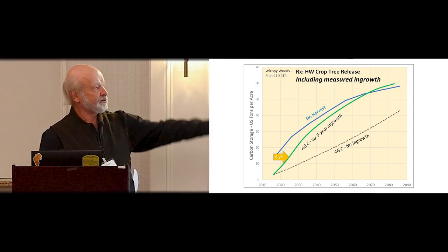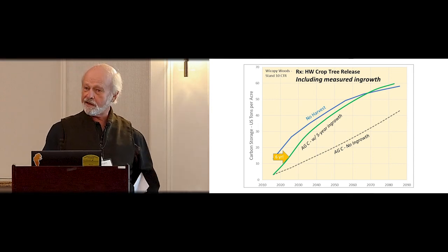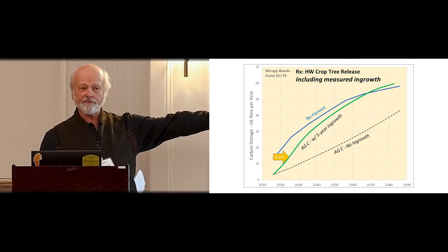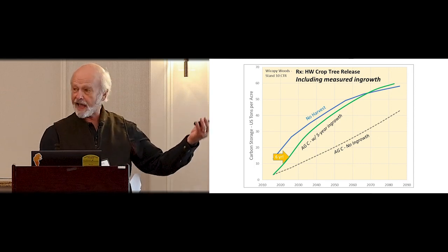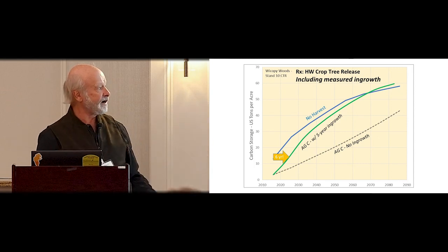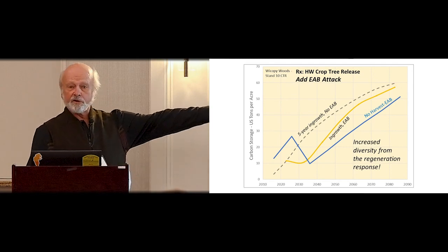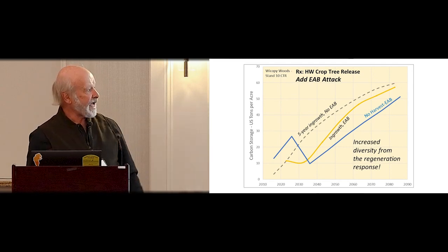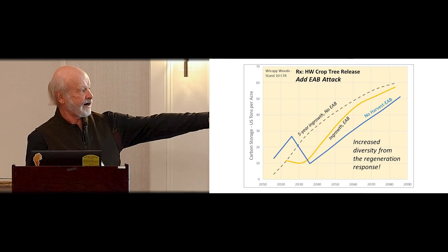The reason we're doing this crop tree release is we want to beat the EAB — emerald ash borer — to these trees. This is still a ways away from us in Maine. So we've got these ash trees at 40 years old. Going back to FVS, instead of killing off the fir, we kill off the ash — and that's what we get: anytime you lose a lot of your crop trees, it's no good.